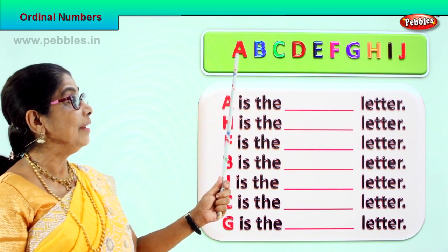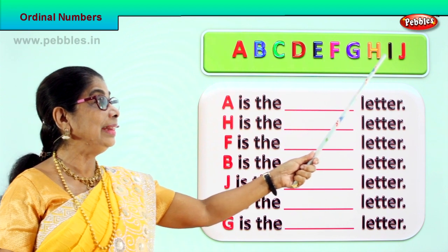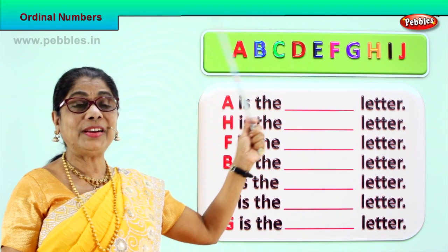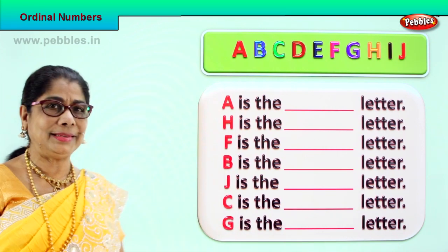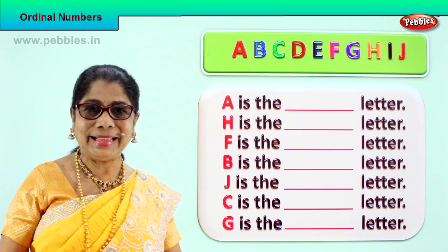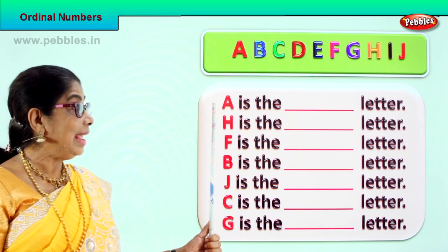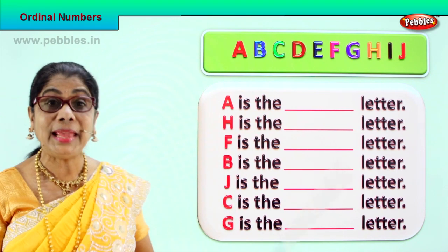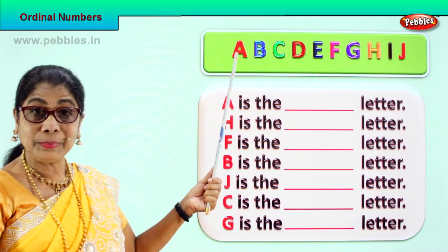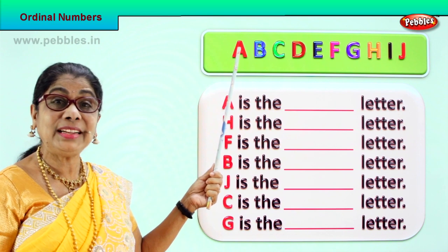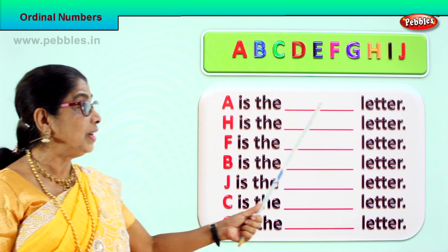So we have ordinals: first, second, third, fourth, fifth, sixth, seventh, eighth, ninth, tenth — first to tenth. Now we have a few letters here. Let's see the ordinal number of each. The letter A — what place is A in? A is in the first place. Correct. So A is the first letter.